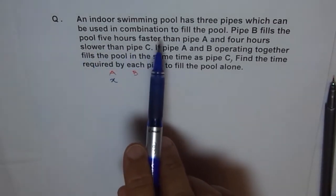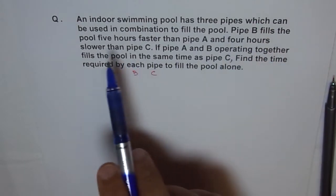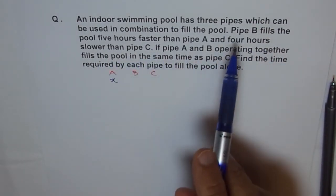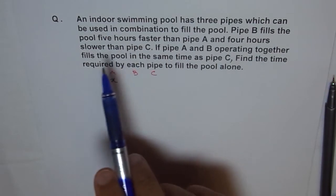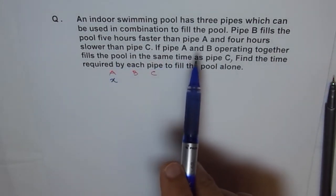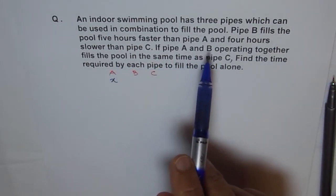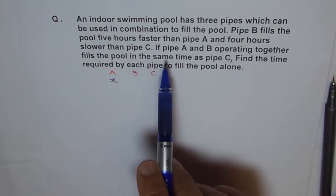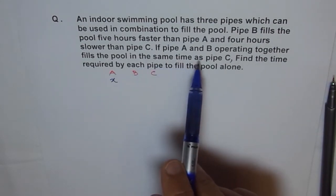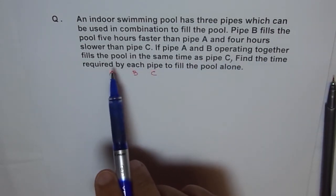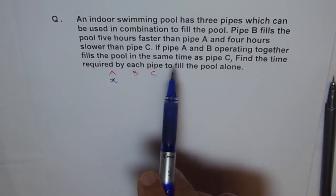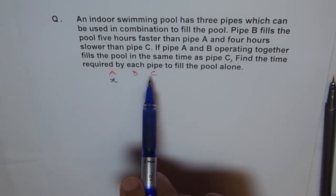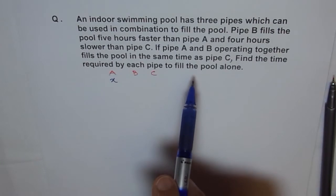An indoor swimming pool has three pipes which can be used in combination to fill the pool. Pipe B fills the pool five hours faster than pipe A and four hours slower than pipe C. If pipe A and B operating together fills the pool in the same time as pipe C, find the time required by each pipe to fill the pool alone.